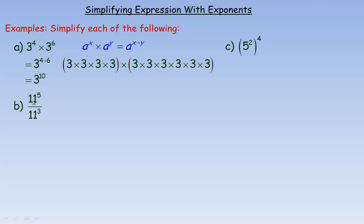The second example is 11 to the fifth divided by 11 to the power of 3. The exponent rule applied here is that when dividing powers with the same base, you subtract the exponents. So a to the x divided by a to the y is a to the power of x minus y. The common base here is 11, so we evaluate this as 11 to the power of 5 minus 3, which is 2.